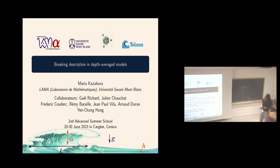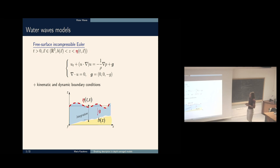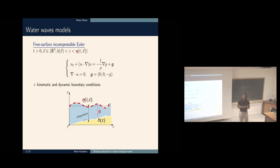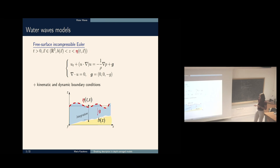Let me explain the mathematical context for wave propagation of the free surface. This model we saw many times this week: the free surface incompressible Euler equation, written in this form for the velocity field of three components and the pressure under the action of gravity. We need to impose kinematic and dynamic boundary conditions on the boundaries of the domain. The first complexity is that the domain itself where the PDEs are imposed is unknown.